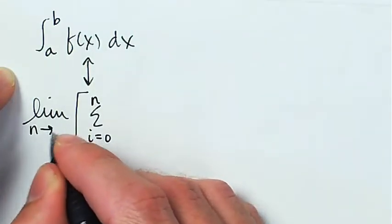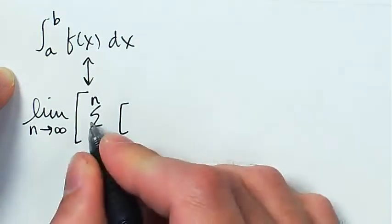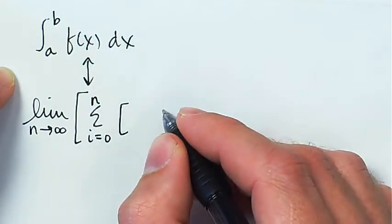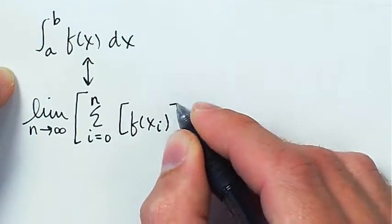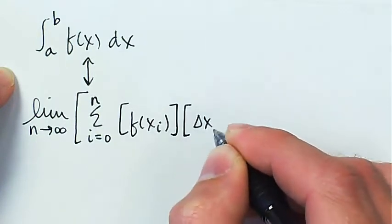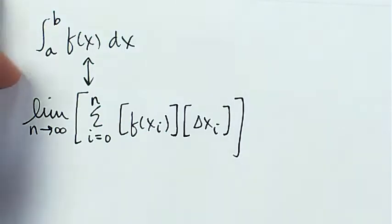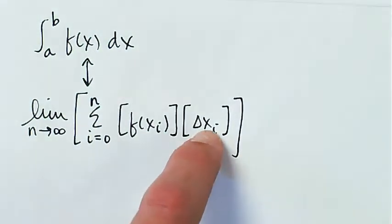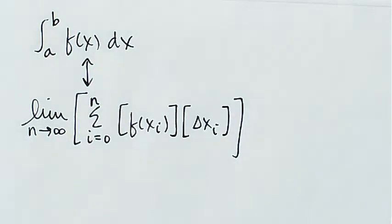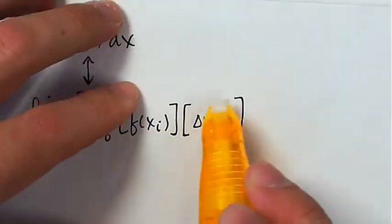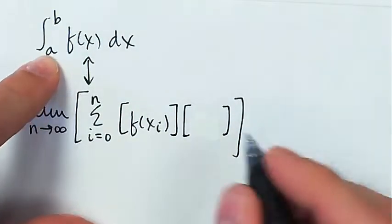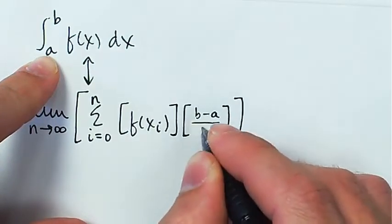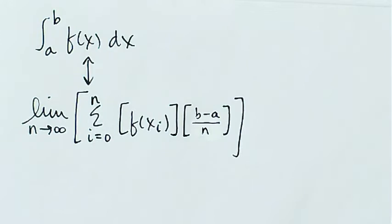We want the number of rectangles to go to infinity. Inside the sum, each summand is the area of a rectangle, right? So it's going to be f(x_i) multiplied by delta x_i. But for AP Calculus and for convenience, we assume that this is always the same. We equally subdivide the interval, and delta x is (b - a) divided by n. The width of the whole interval divided up into the number of rectangles, equally subdivided.